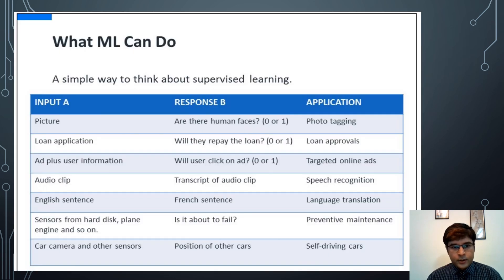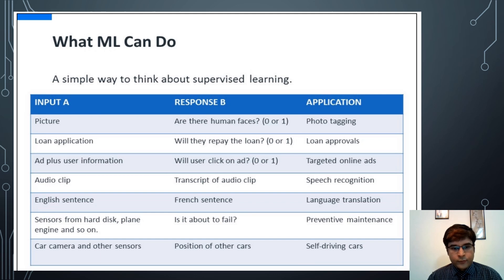Here is what supervised ML can do, illustrated as a table of input, response, and application. Given a picture as input — are there any human faces? Yes or no — this is a photo tagging application. A loan application: will they repay the loan? Classification of 0 or 1 — loan approvals. Ad plus user information: will the user click on the ad? 0 or 1 — targeted online ads. An audio clip as input produces a transcript as response — used in speech recognition. An English sentence is converted to French — a language translation application.